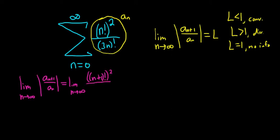over, and then when you put an n plus 1 here, you get 3n plus 1 factorial. That's the same thing as 3n plus 3 factorial.